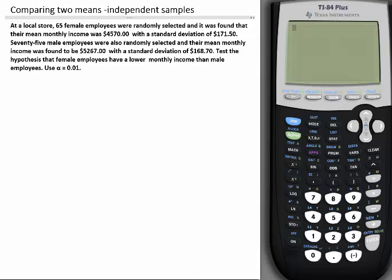Let's read the example and show you how to go about doing this using the calculator. You will use the calculator, you don't do any work by hand. At the local store, 65 female employees were randomly selected and it was found that their mean monthly income was $4,570 with a standard deviation of $171.50.